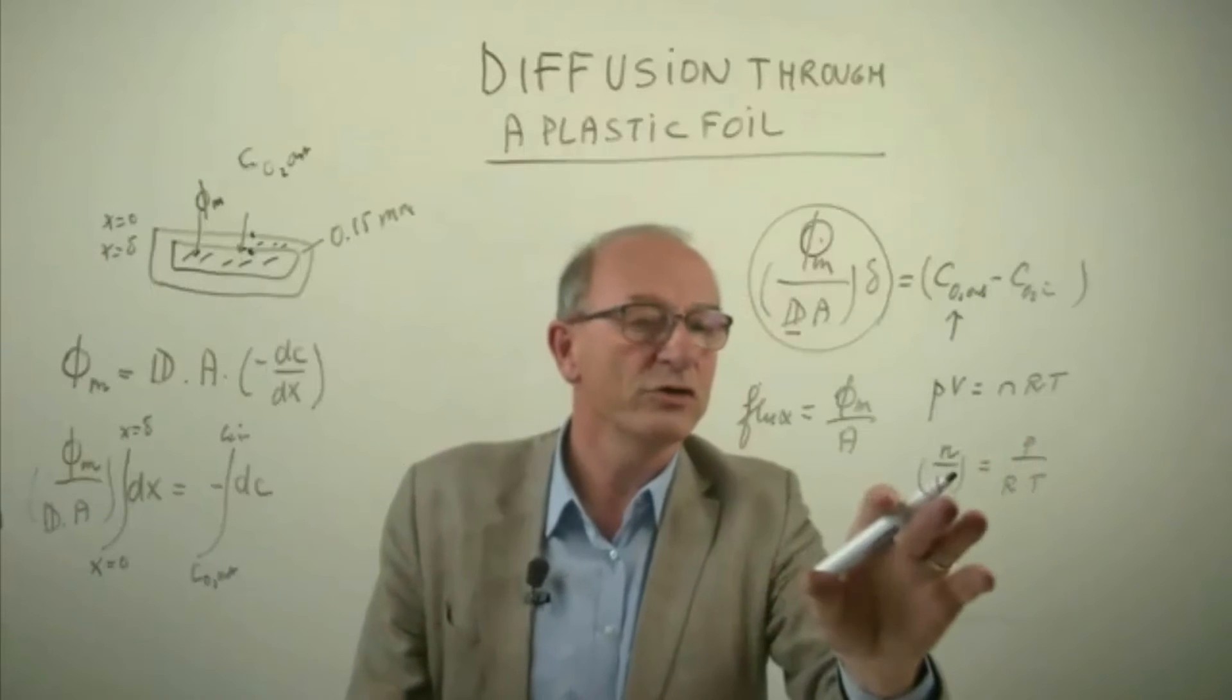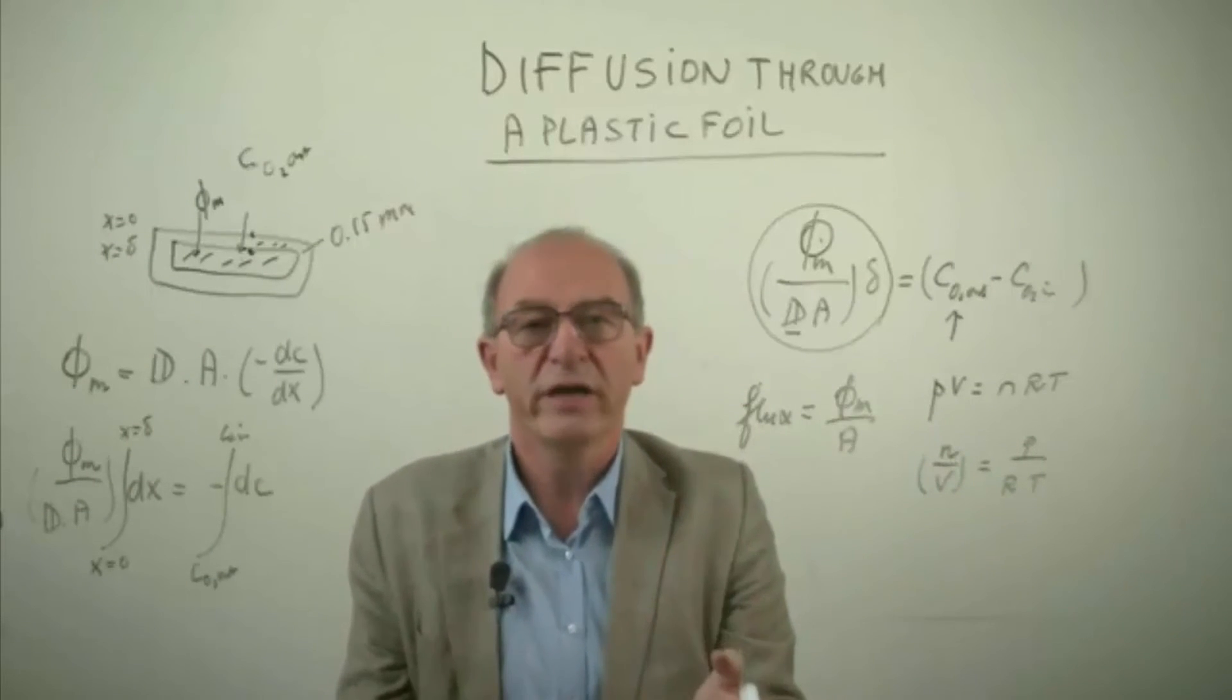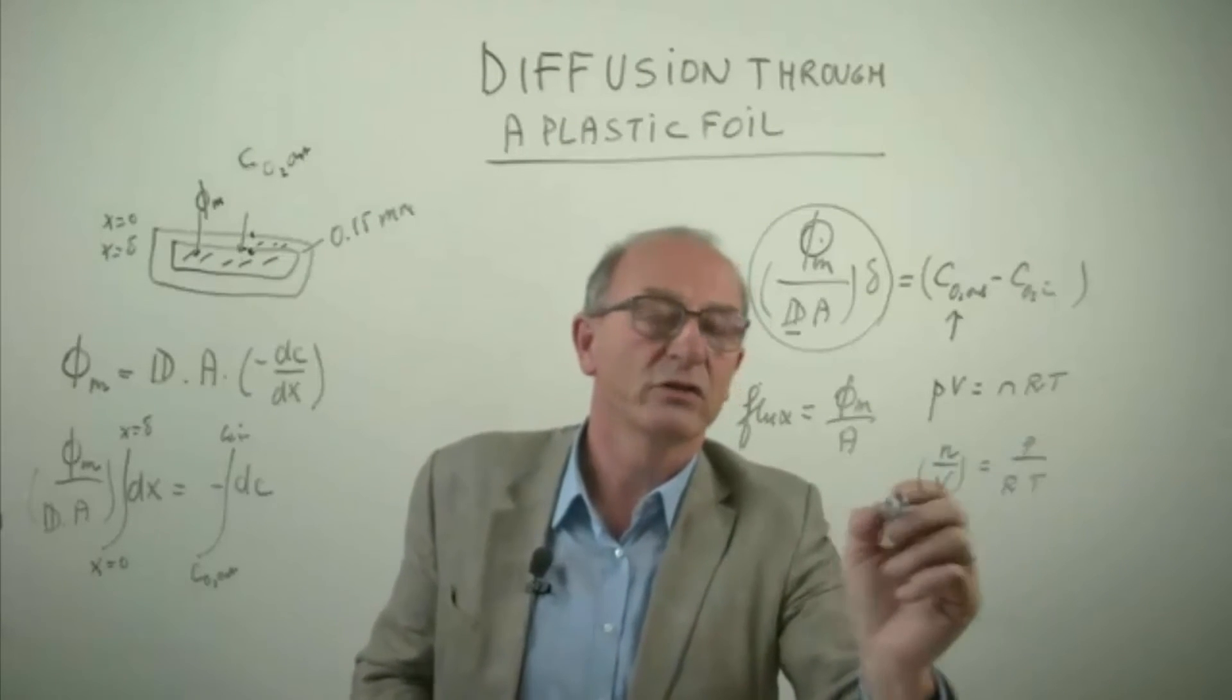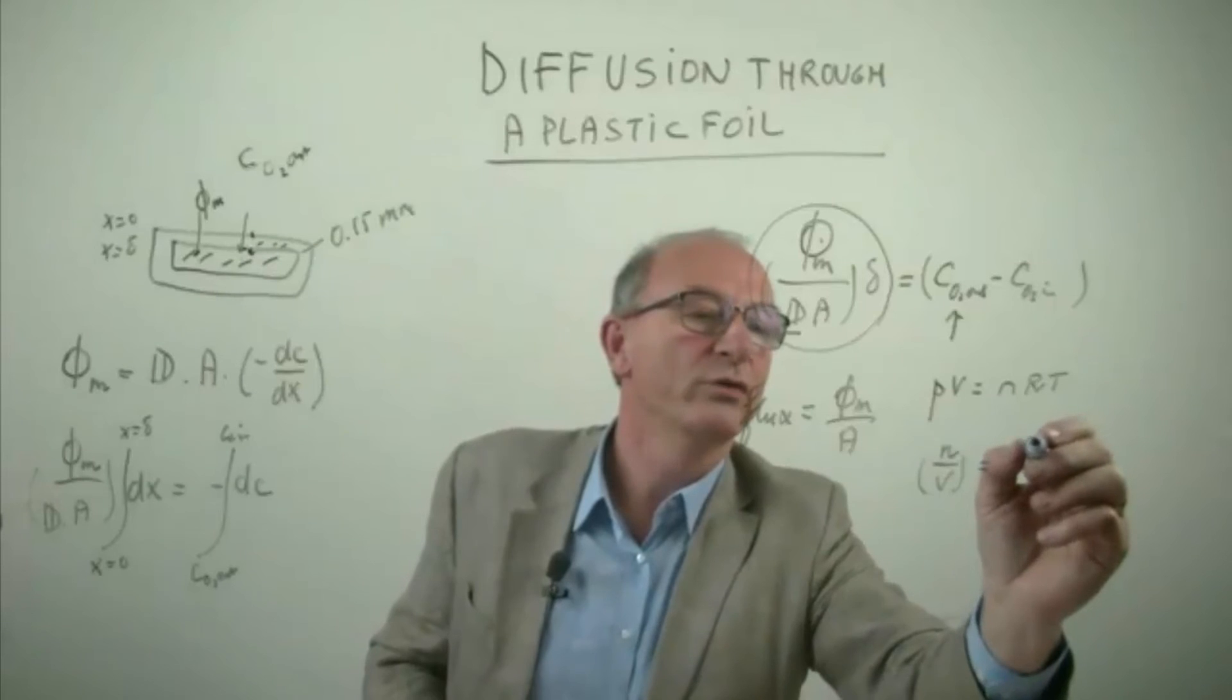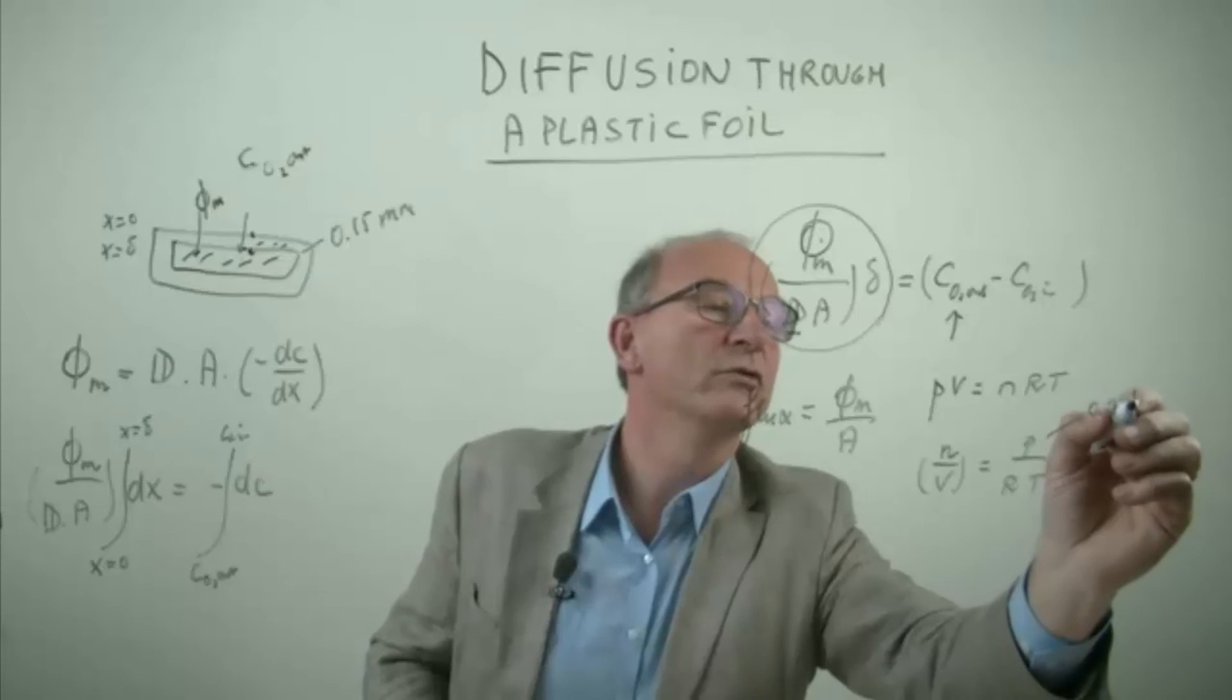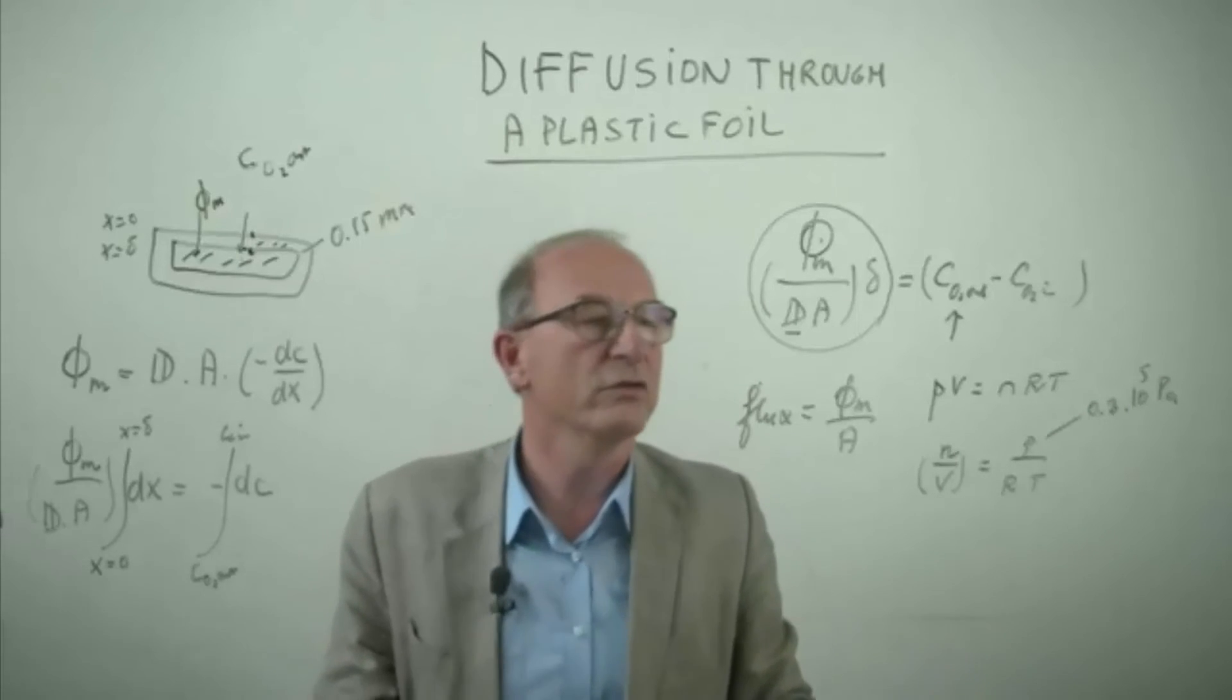But if this is for oxygen we have to realize that in the air there's 80% nitrogen and only 20% oxygen, that this is the partial pressure of oxygen. So if you want to calculate this pressure you have to realize that it is 0.2 times roughly multiplied by the atmospheric pressure here which is 10 to the fifth pascals.